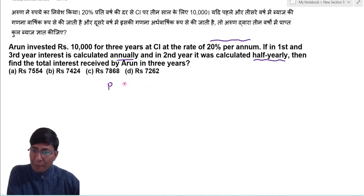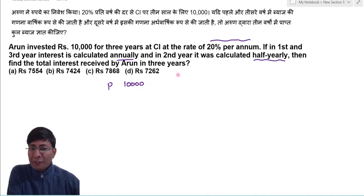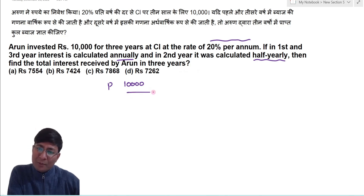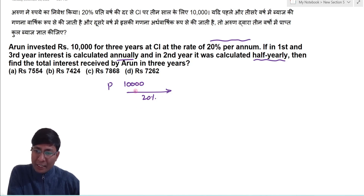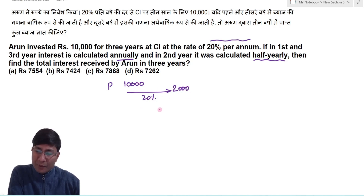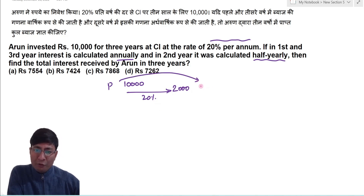Principal amount is 10,000. In the first year, the rate of interest is 20% per annum. In the first year, simple interest equals compound interest. 20% is 1 upon 5, which gives 2,000. So after the first year, the principal becomes 12,000.